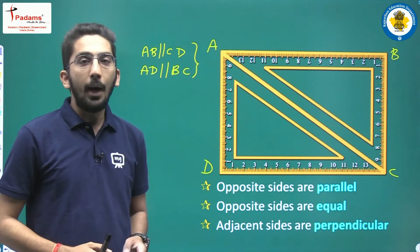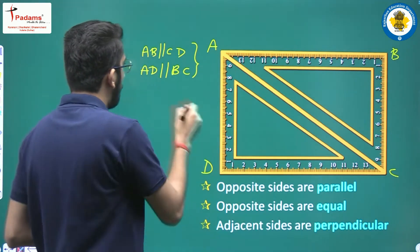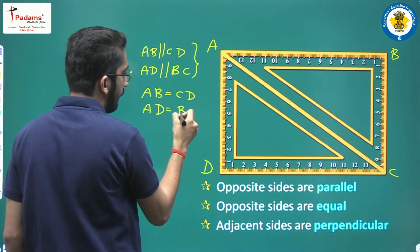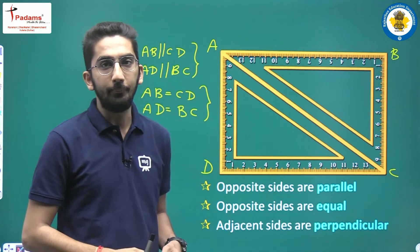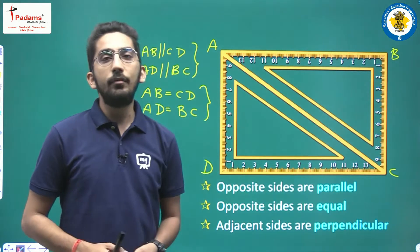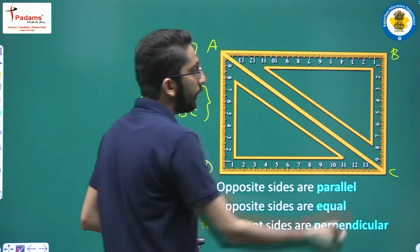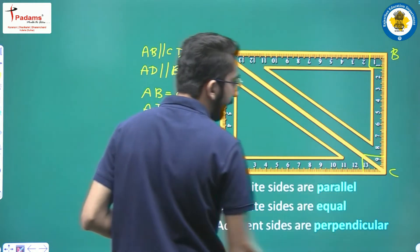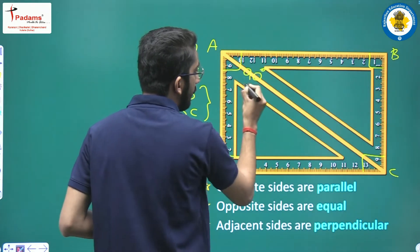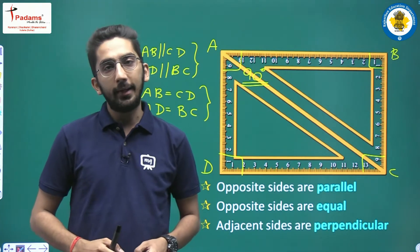Next, opposite sides are equal: AB equals CD, and AD equals BC. The last property is that adjacent sides are perpendicular. Adjacent sides AB and BC are perpendicular to each other, so they form a 90-degree angle. Similarly, all four angles — angle A, angle B, angle C, and angle D — are 90 degrees in a rectangle.